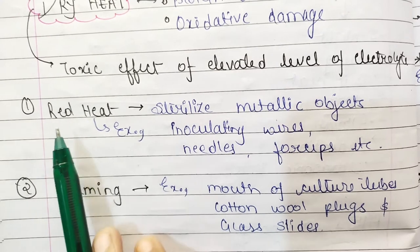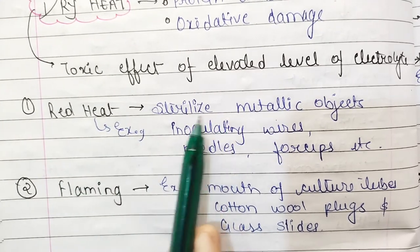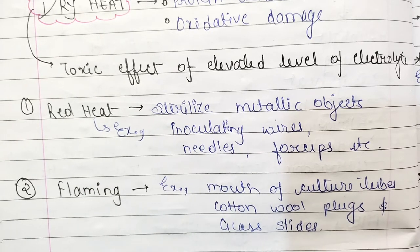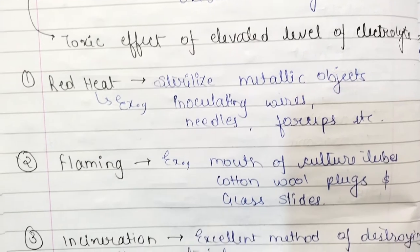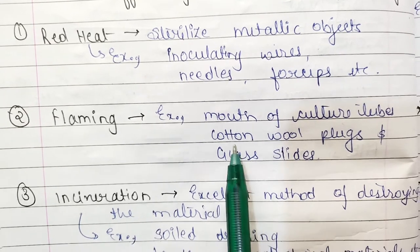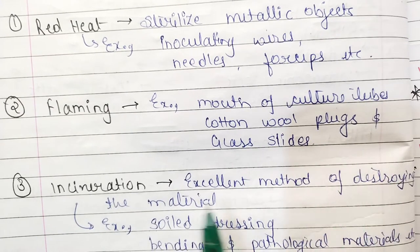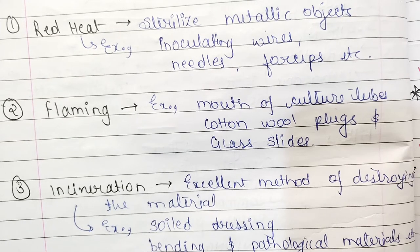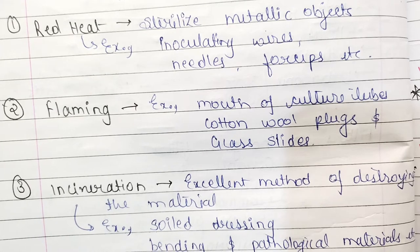Red heat can be used for sterilizing metallic objects such as inoculating wires, needles, and forceps. Flaming is used for sterilization of the mouth of culture tubes, cotton wool plugs, and glass slides. Incineration can be used for soiled dressings, bedding, and pathological materials - it is an excellent method of destroying bacteria and viruses.